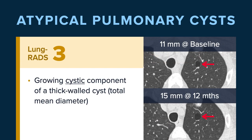Lung RADS III is for a thick-walled cyst that demonstrates a growing cystic component. A thick-walled cyst is initially classified as a Lung RADS IV-A lesion, but over time it may be stable and be downgraded to Lung RADS II. As you follow that lesion on subsequent lung cancer screening, if you see that the cystic component is increasing in size, then we're going to upgrade and classify it as a Lung RADS III. In this particular example, this cyst is predominantly thin-walled but there is some nodularity along the inferior margin — it was stable, but eventually the cystic component increased, so this is now a Lung RADS III.